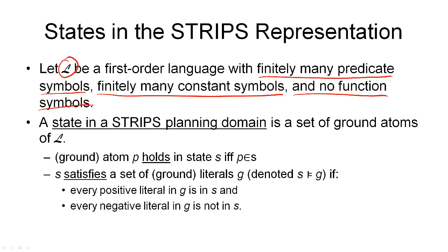A state in a STRIPS planning domain, then, is a set of ground atoms over this language L that we've just defined. Let me go into this. By an atom, we mean a predicate with an appropriate number of objects that we have just defined in the previous slide. An atom is considered ground when all its arguments, all the objects it relates, are real objects as opposed to variables.